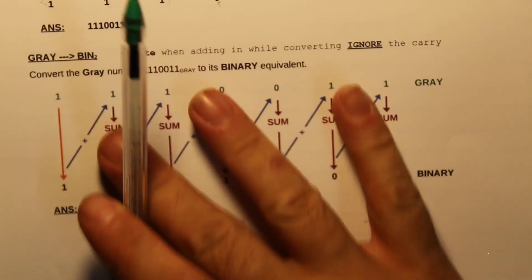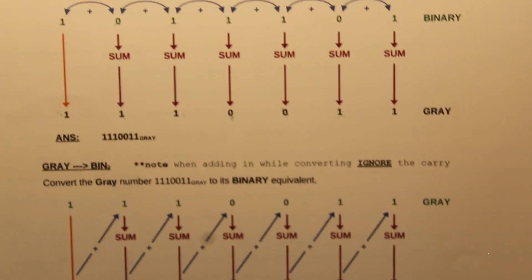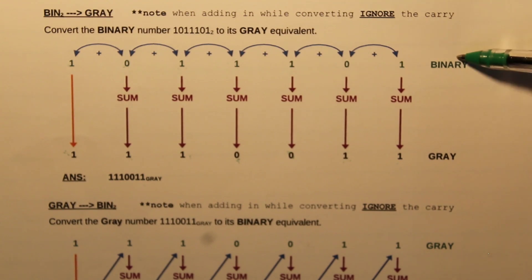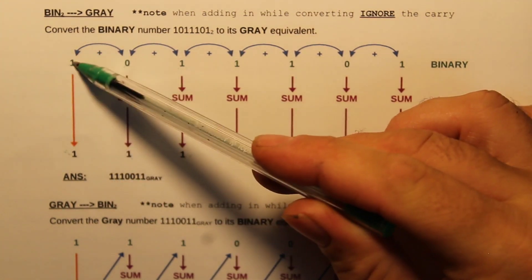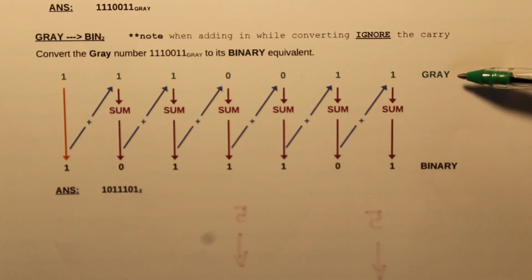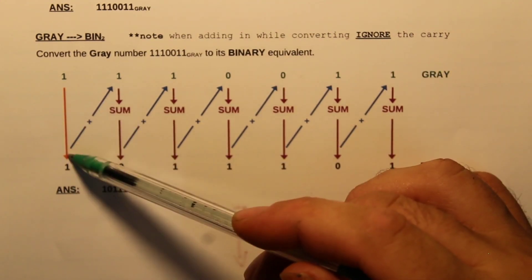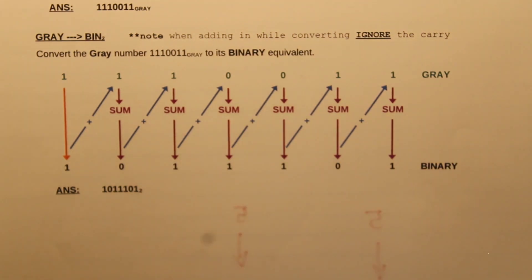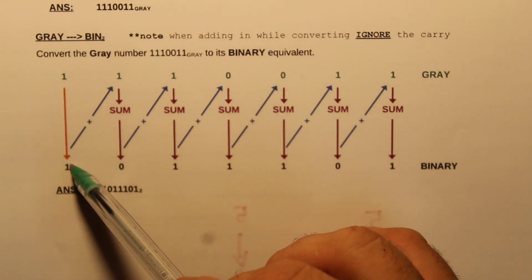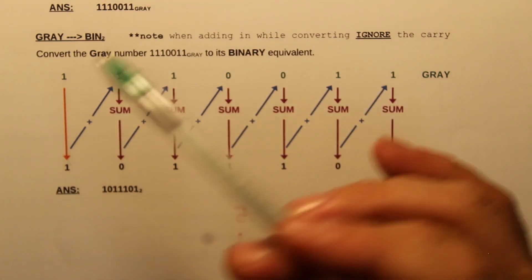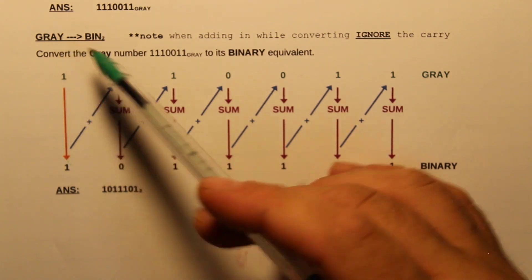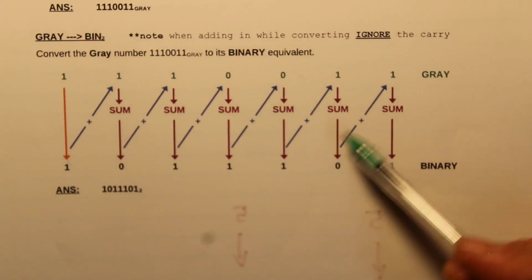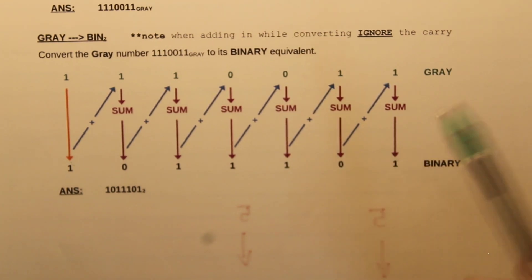To summarize the differences: binary to Gray — drop down the first number, then add across. Gray to binary — drop down the first number, then add diagonally and put the answer down diagonally. Remember, if you don't bring down the first bit in either direction, you'll end up short at the end and there won't be a number there — that's how you know you've made a mistake. That's the Gray Code.